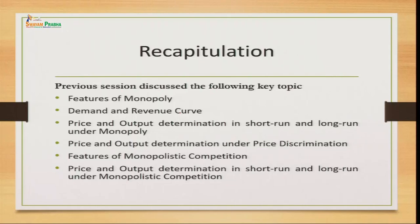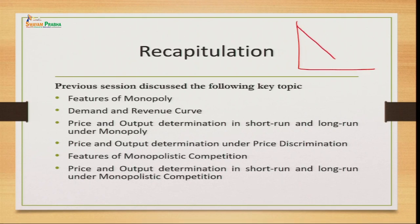We also talked about the demand and revenue curve of the monopoly market. Demand in the monopoly market is highly inelastic because the seller is the single seller and does not have a close substitute. The demand curve of the monopoly market is downward sloping. This AR is the demand curve and it is steeper because the demand is highly inelastic, which means a higher change in prices causes a lesser change in demand. Below this lies the marginal revenue curve.